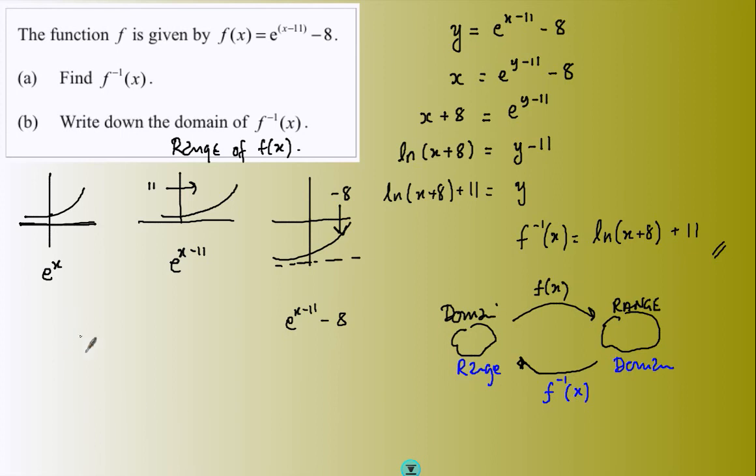So the range of my original was greater than negative 8, which means the domain of my inverse must be exactly that. So the domain of my inverse is what came out of my original. And so what I can put in my inverse, the domain, is quite simply x has got to be greater than negative 8.